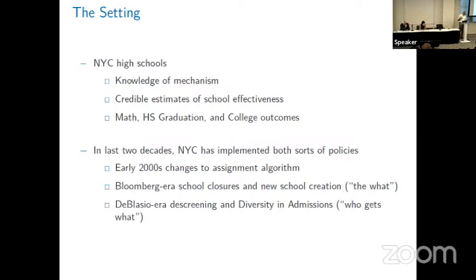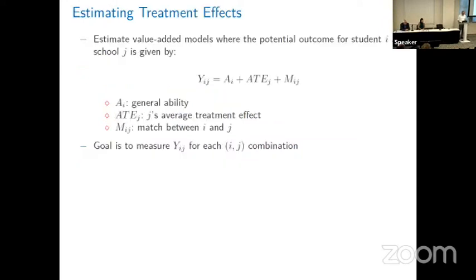Bloomberg had a pretty aggressive school closure policy — this is almost why he didn't get another term — and they created many new schools. Bloomberg was a politician focused on the 'what.' The mayor that came after, Bill de Blasio, decided to devote a lot of attention to de-screening — changing the admissions priorities used at particular high schools, with his signature effort being diversity in admissions: engineering certain demographic profiles attending certain schools. So Bloomberg focused on who gets what versus de Blasio focused on market clearing.